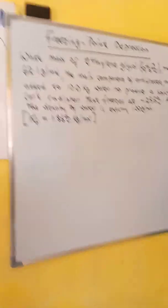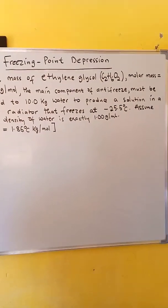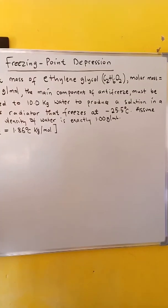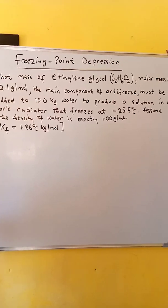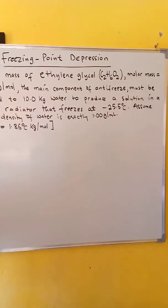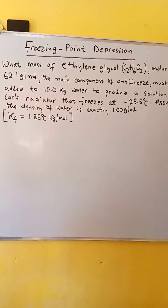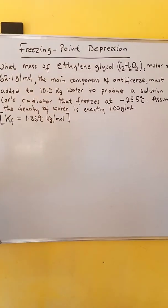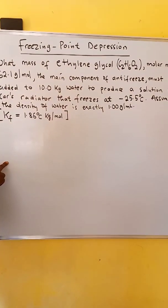Let's look at this example on how we can calculate the mass of ethylene glycol. Molar mass 62.1 gram per mole, the main component of antifreeze must be added to 10 kg water to produce a solution in a car's radiator that freezes at negative 25.5 degrees Celsius.